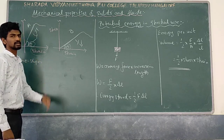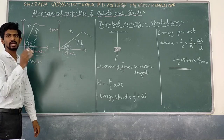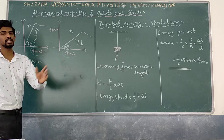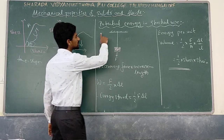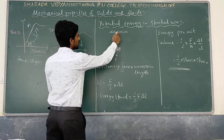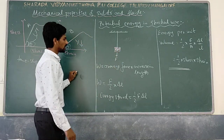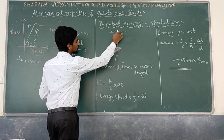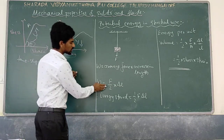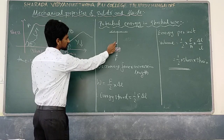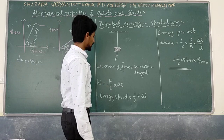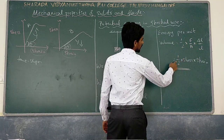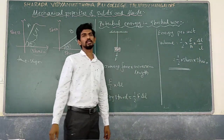Comparing rubber and steel: rubber shows large deformation for a small applied force, so it is less elastic. Steel requires large stress for small change in length, so it is more elastic. Now, the potential energy stored in a stretched wire: work done is average force multiplied by increase in length, which is (F/2) × delta L. This is stored as potential energy. Energy per unit volume is half times stress times strain.